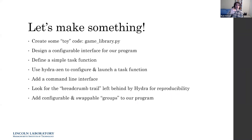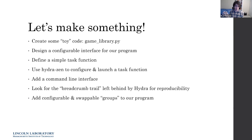Let's actually make something. We're going to create some toy code called gamelibrary.py. We'll use Hydra Zen to design a configurable interface for this library, then define a task function that uses the library's code. Once we have all of these things, we'll configure and launch our program, add a command line interface, follow the reproducibility breadcrumb trail, and identify groups we want to make wholesale configurable and swappable.